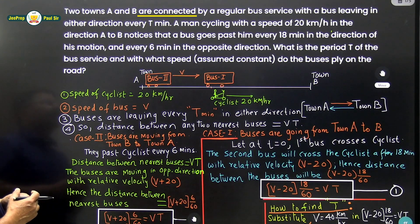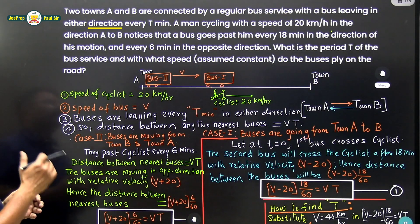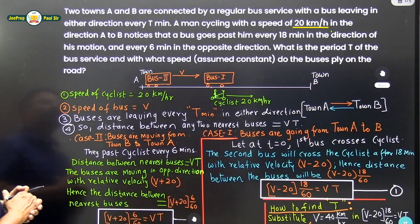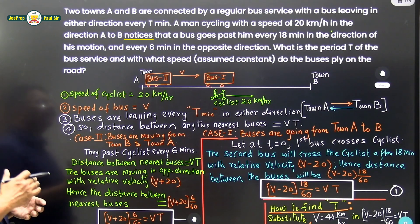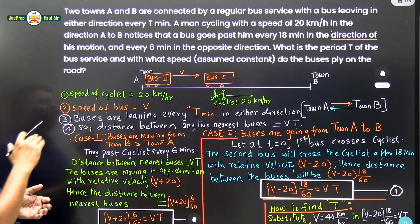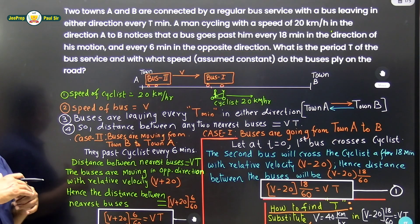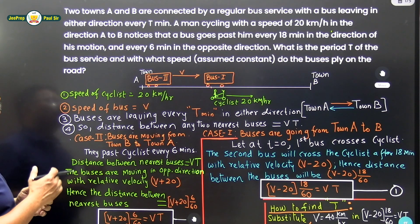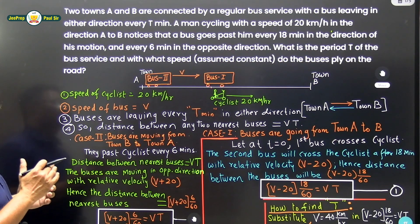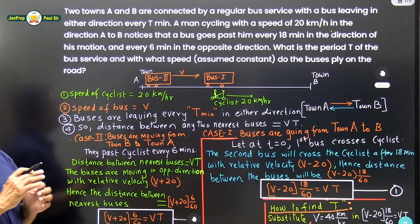Two towns A and B are connected by regular bus service with a bus leaving either direction every 10 minutes. A man cycling with a speed of 20 km per hour in the direction of A to B notices that a bus goes past him every 18 minutes in the direction of his motion and every 6 minutes in the opposite direction. What is the period T of the bus service and with what speed do the buses ply on the road? The speed of the buses may be taken as constant.